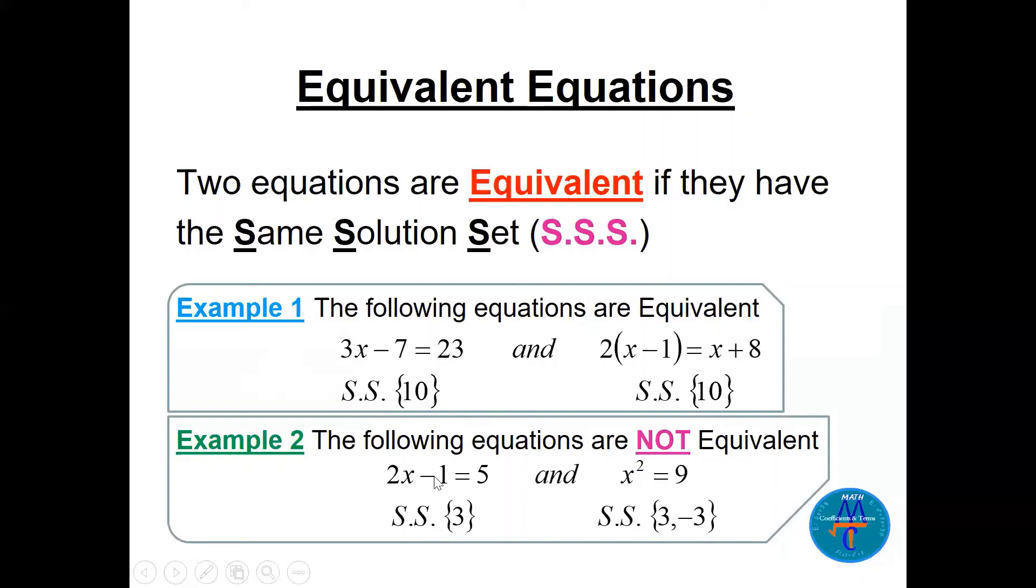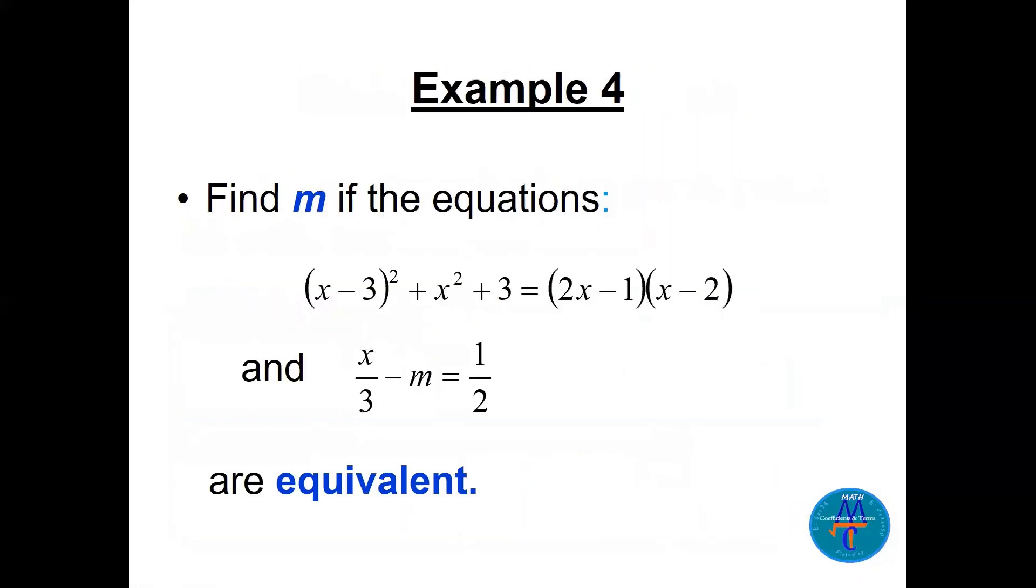Now look at this here. 2x minus 1 equals 5, x will be 3. This one, x squared equals 9, x will be 3 or minus 3. Solutions are not the same. So the equations are not equivalent. You can have a nice question about this idea. Maybe, yeah, maybe this one. Wow, really nice question here. Find M.